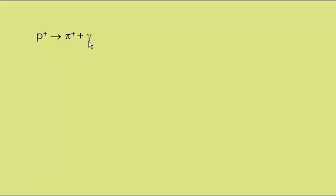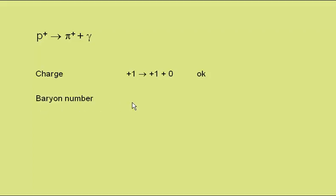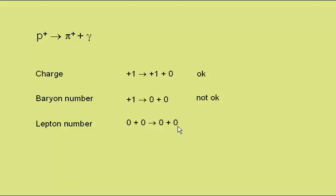In this example, a proton becomes a pi-plus plus a gamma ray. In terms of charge, the proton has a charge of plus one, the pi-plus a charge of plus one, and the gamma ray is neutral. So in terms of charge conservation, this is OK. Baryon number: the proton has a baryon number of plus one, the pi-plus zero baryon number, and the gamma ray zero baryon number. So this does not balance — breaking the conservation laws means this interaction cannot occur. Lepton number: all these are not leptons, so in terms of lepton number this is OK. However, breaking one conservation law means the interaction is not possible.